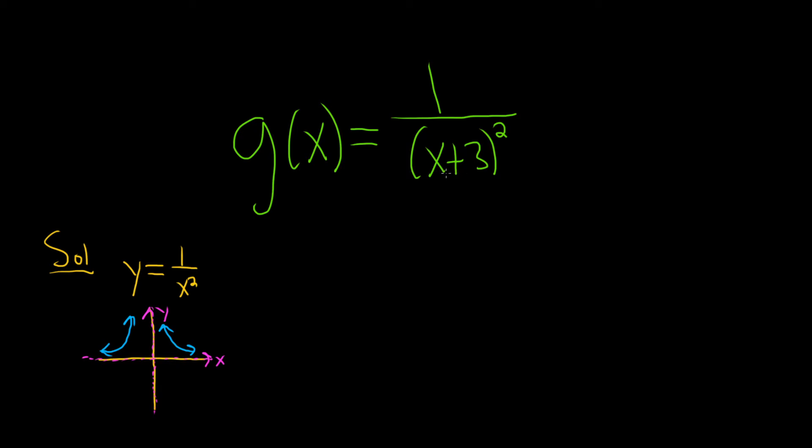So whenever you add a number to the x, you go left. It's backwards. So in this case, we're going left by 3. So we're just taking this entire graph and going left by 3.